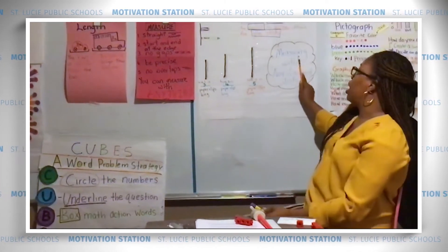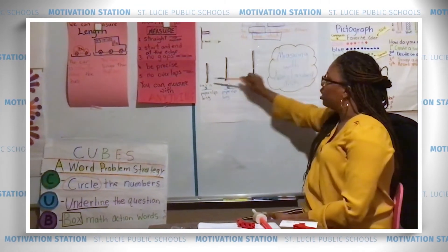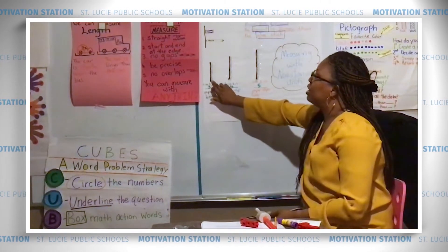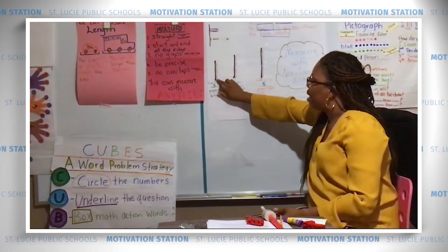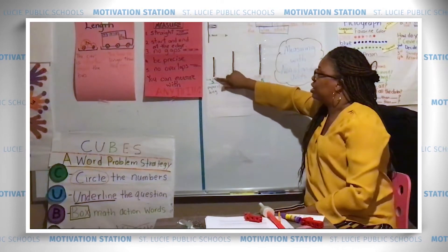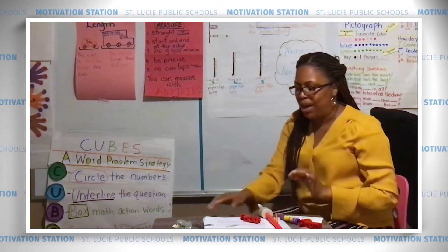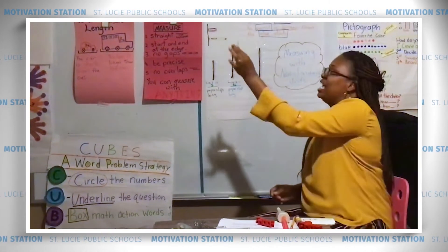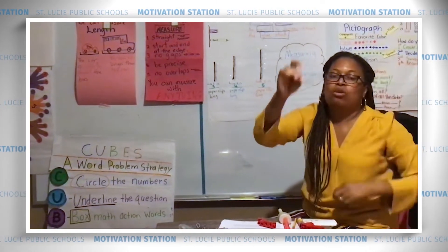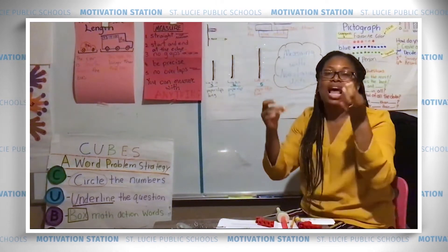When we talk about non-standard units like paper clips or cubes, it's important that when measuring you go from end to end with no gaps. I made some yarn lines here — line one, line two, and line three. How many paper clips long is this line? Let's count: one, two, three — that's three paper clips long. It's also important to use the same exact unit. I have small paper clips and bigger paper clips, but I have to use the same size for all measurements. I can't mix big ones and small ones.